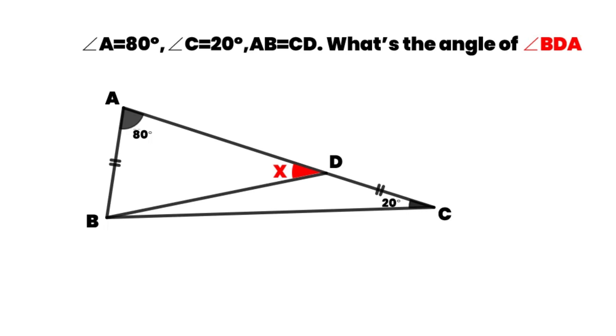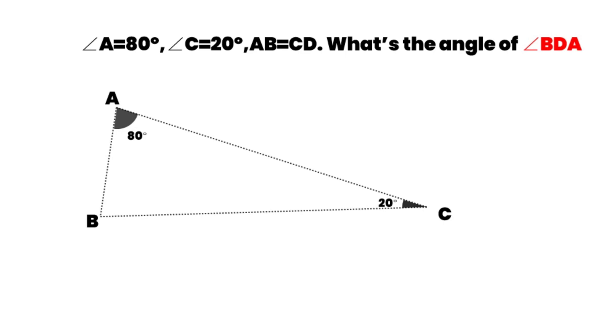We start by checking the hidden conditions in the problem. Angle A is equal to 80 degrees and angle C is equal to 20 degrees. So angle B, that's equal to 180 minus 80 minus 20, which is equal to 80. So we know that triangle ABC is an isosceles triangle.